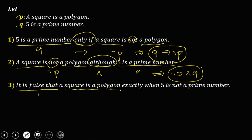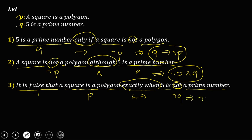For the next compound statement: 'it is false a square is a polygon exactly when five is not a prime number.' 'It is false a square is a polygon' gives ¬p, 'exactly when' is the biconditional (↔), and 'five is not a prime number' is ¬q. So the symbolic form is ¬p ↔ ¬q.